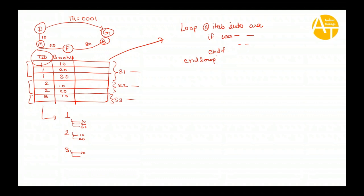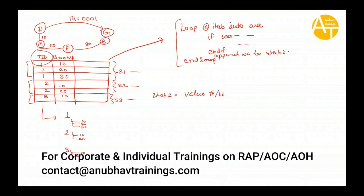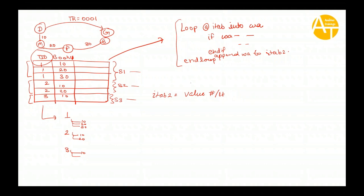Sometimes during this loop you also append your work area to a second internal table ITAB2. Now this whole thing can be done in a single line. You can say ITAB2 equals your value expression — you can put a hash symbol if ITAB2 is already declared, or you can put the table type if ITAB2 is not declared and you want to do inline data declaration for it.